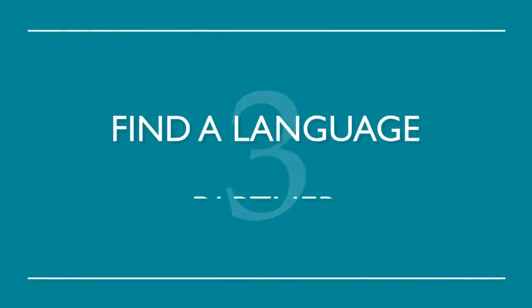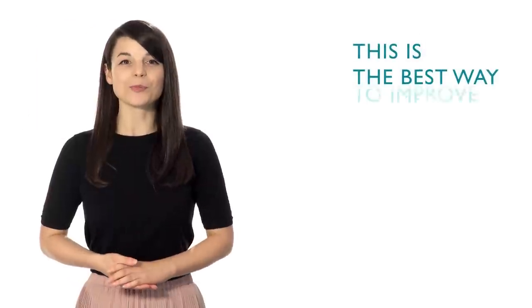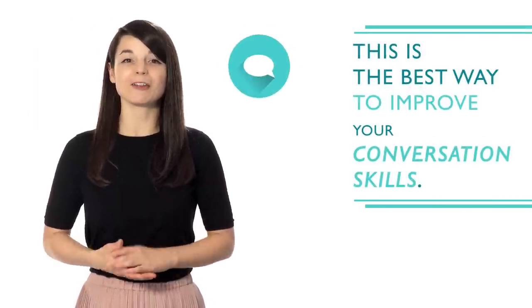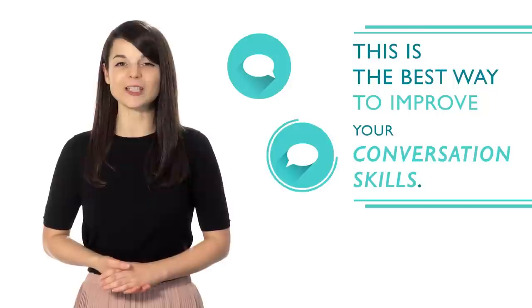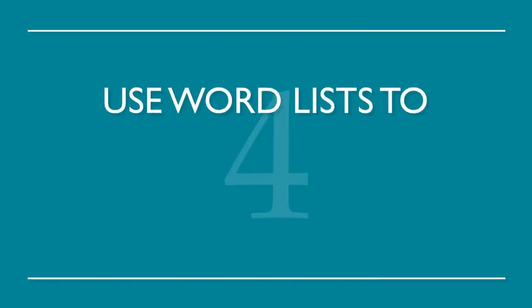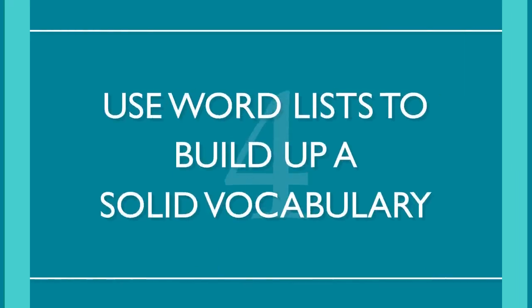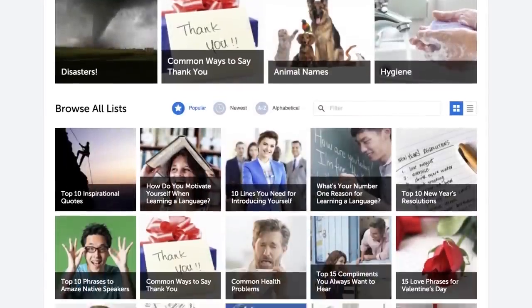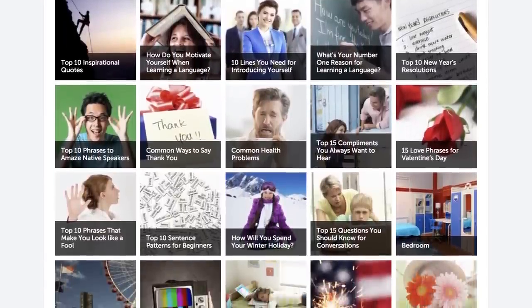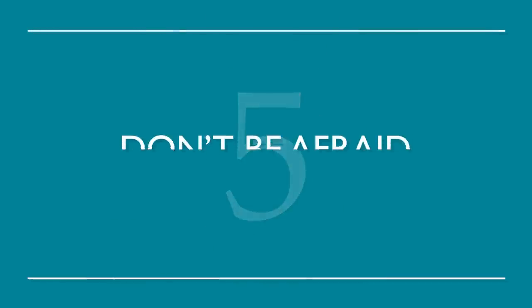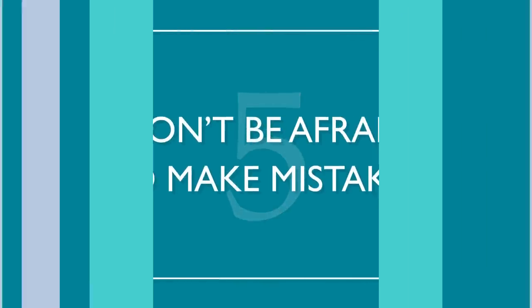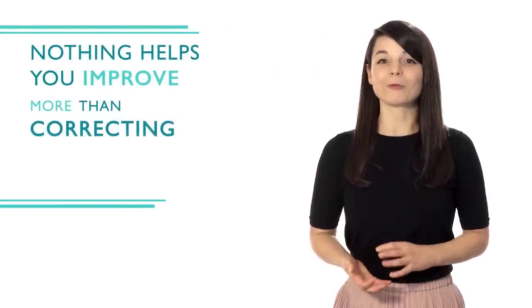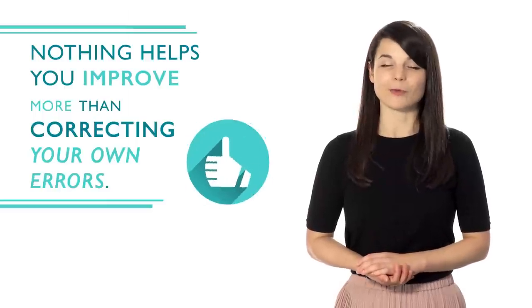Number three: find a language partner. This is the best way to improve your conversation skills — it will help you gain fluency even faster and increase confidence when speaking. Number four: use word lists to build up a solid vocabulary. This is a great way to build fluency one word at a time. We have all the word lists you need, with a range of topics from food to love. Number five: don't be afraid to make mistakes. Nothing helps you improve more than correcting your own errors — you're more likely to remember it correctly next time. Everyone makes mistakes; don't be afraid to learn from them.